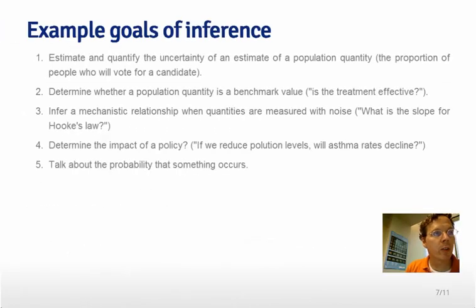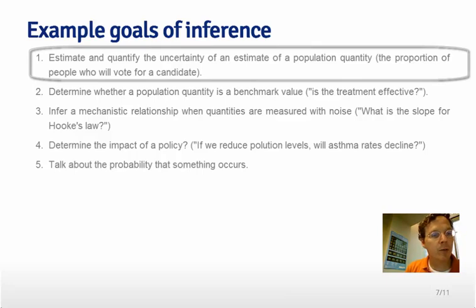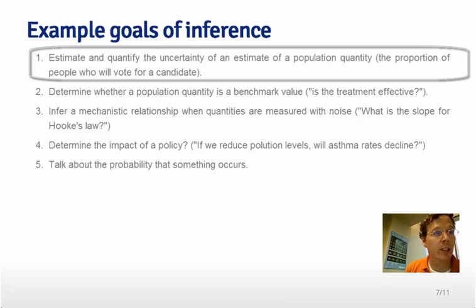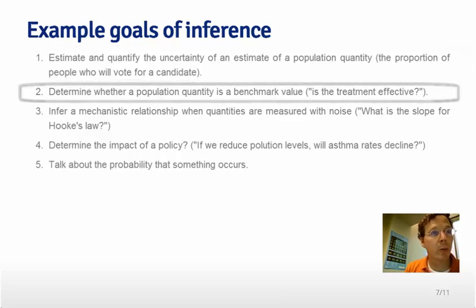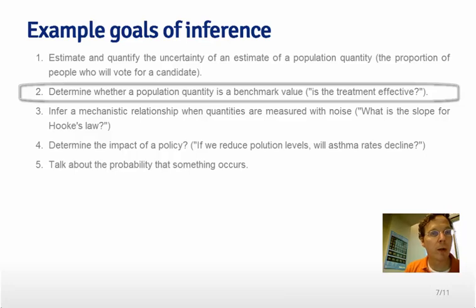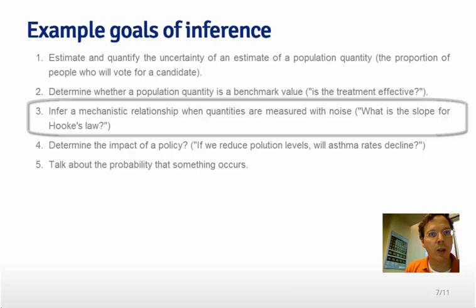Let's go through some examples of goals of inference. In this class, not only will we estimate things, we'll formally define the estimates. Our sample mean will be the estimate of a population mean. In our polling example, we want to estimate the proportion of people who will vote for a candidate on election day, but we're going to have a potentially biased small sample. We want to quantify the uncertainty in that small sample and acknowledge how our assumptions play into both our estimate and how we've quantified the uncertainty. We might also want to determine whether a population quantity meets a benchmark value — is the treatment effective? — alluding to a topic called hypothesis testing. We might test whether the proportion of people who respond to treatment equals the proportion who respond to a control therapy.